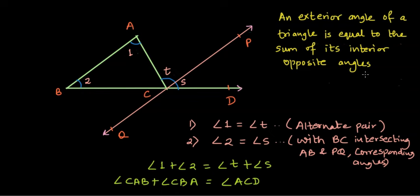Formally, this statement can be written as an exterior angle of a triangle is equal to the sum of its interior opposite angles. The keyword opposite is important because if we are considering this as the exterior angle, we cannot take this interior angle itself. We have to take angle one and angle two.